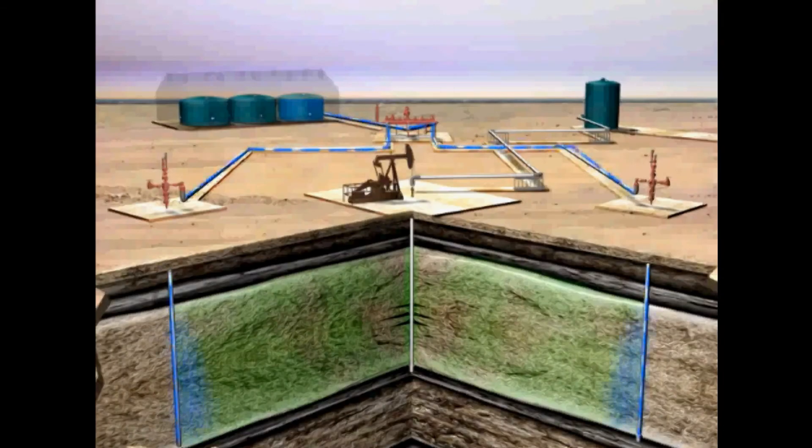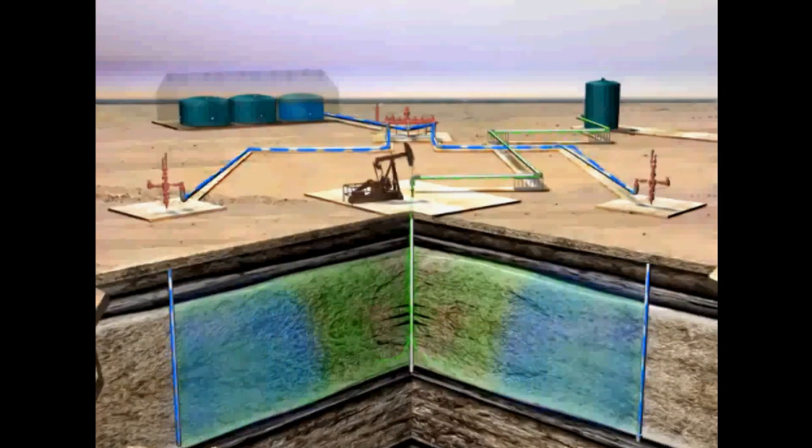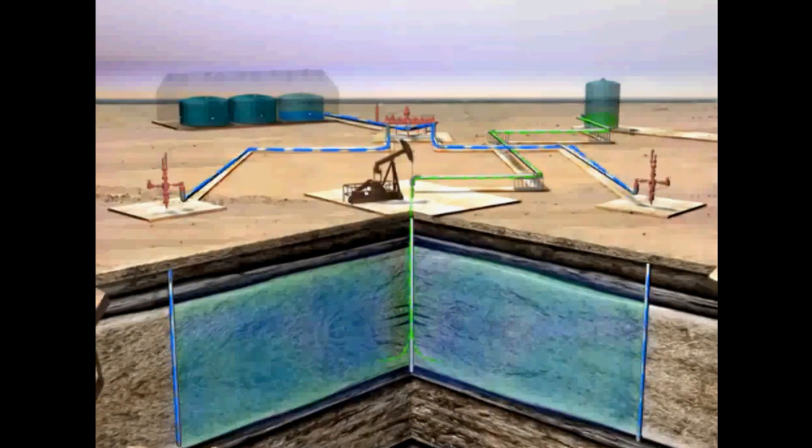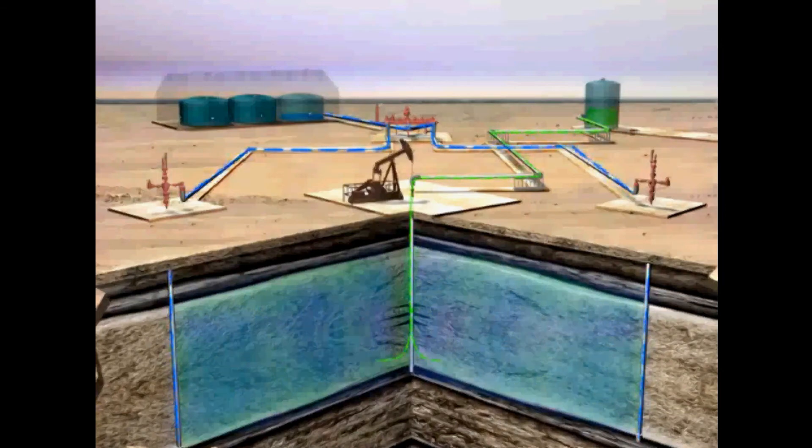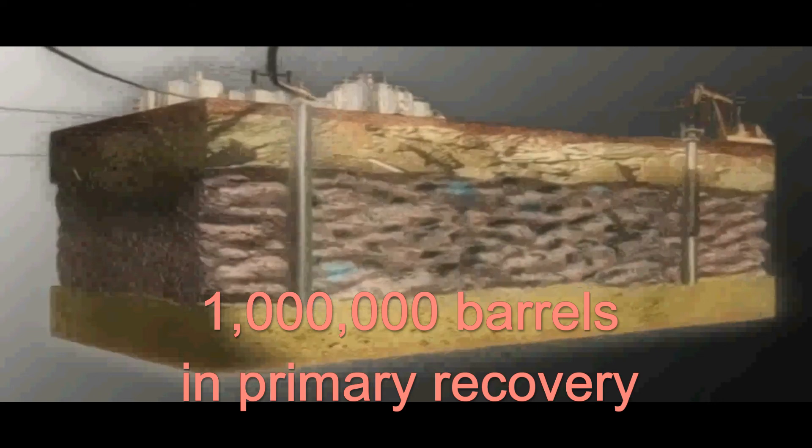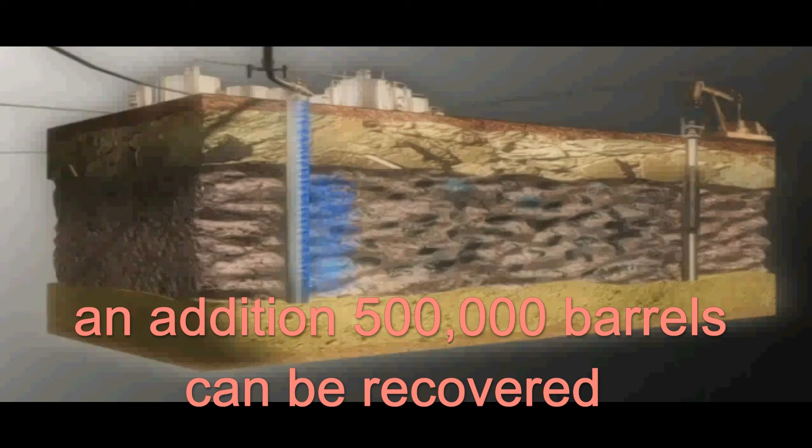Water flooding is used after primary recovery efforts cease in solution gas drive reservoirs, and is the most common. This method recovers about 50% more of what was recovered in primary production. For example, if one million barrels was produced during primary recovery, then an additional 500,000 barrels can be recovered using this secondary drive.